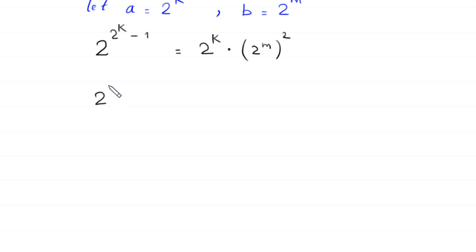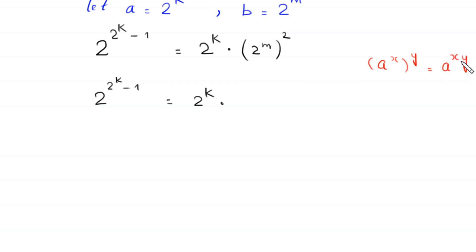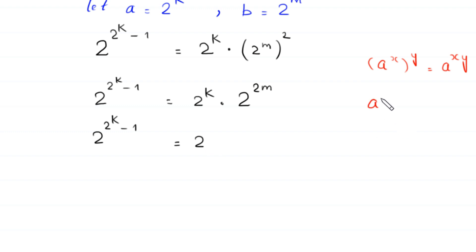Next, 2 to the power (2 to the power k) minus 1 is equal to 2 to the power k times — by using the property of exponents, (a to the power x) whole to the power y equals a to the power xy — (2 to the power m) squared becomes 2 to the power 2m. Then using the property a^x times a^y equals a^(x+y), we add the powers k and 2m to get k plus 2m.